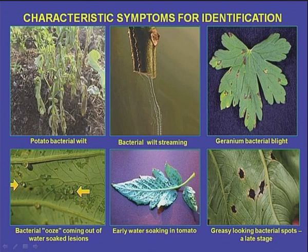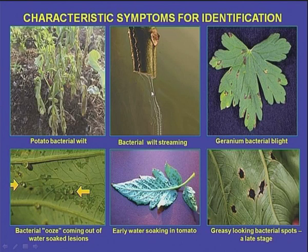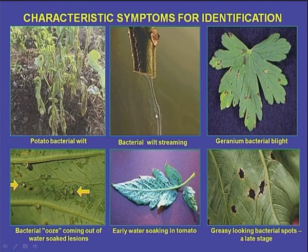This is the potato plant showing wilt infection. Secondly, this is the bacterial wilt streaming test — when we cut the stem of the affected plant and dip it in clean clear water, after a short time we can see streaming of bacteria coming out from the cut ends of the stems. This is the characteristic identification of bacterial infection in plants, especially wilt infections.